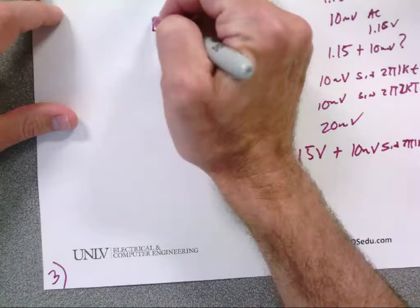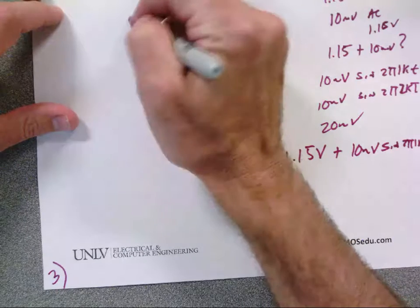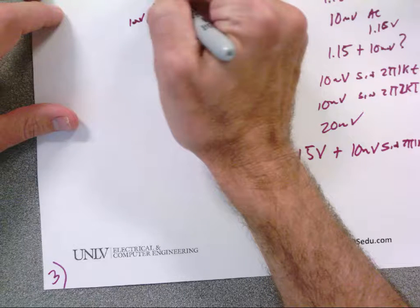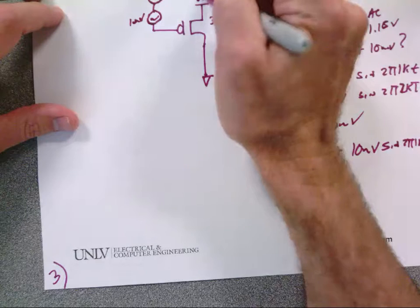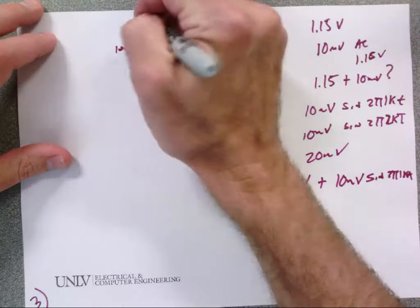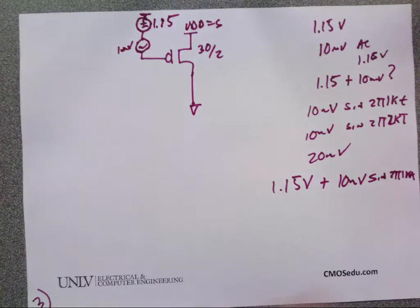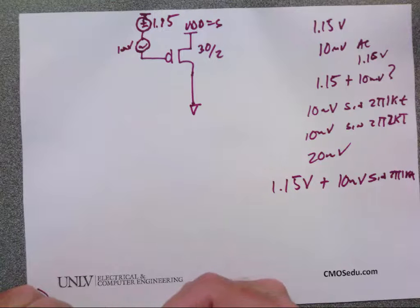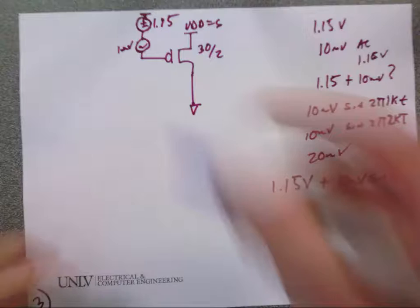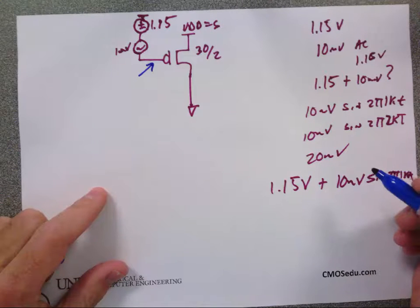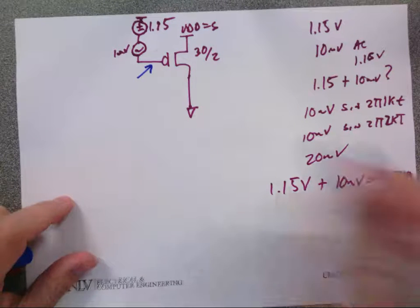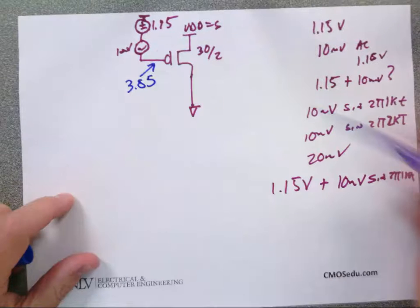In the SPICE schematic I'm placing an AC source of 1 millivolt and a DC voltage to VDD. The DC voltage at the output node will be 3.85 volts.